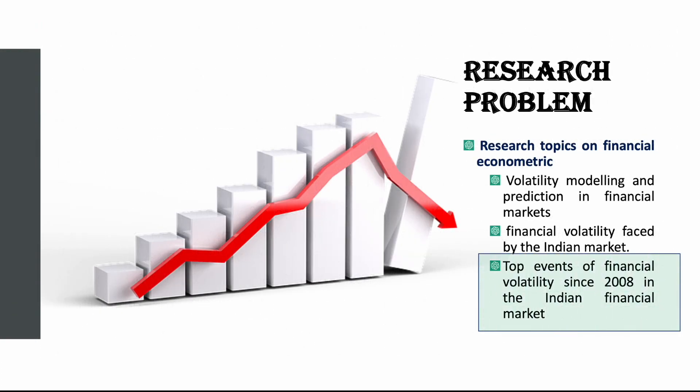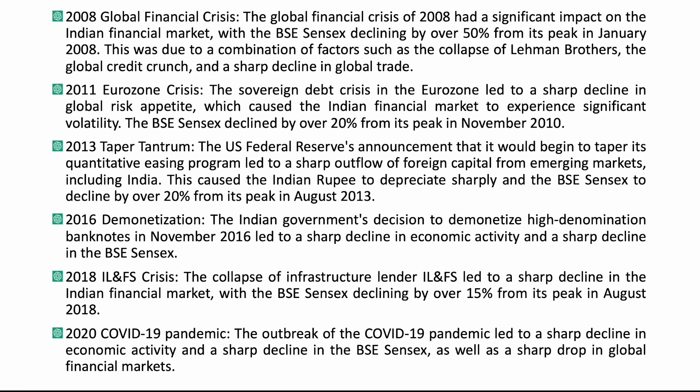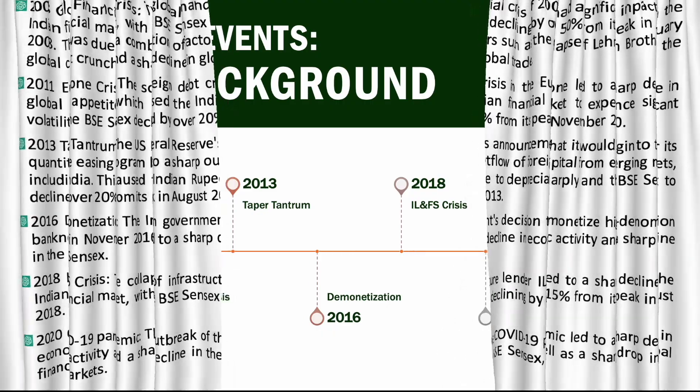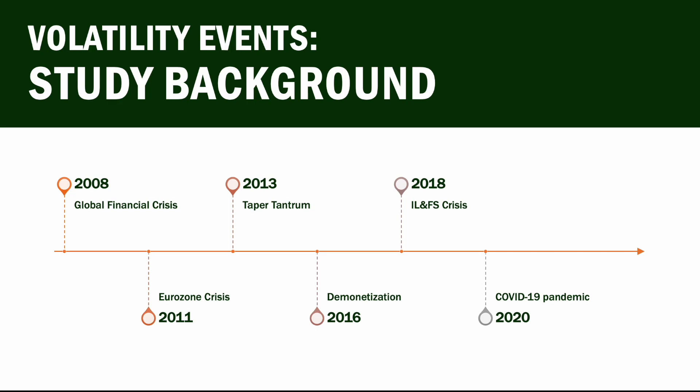Next, to build the background of our research problem, I asked ChatGPT: 'Top events of financial volatility since 2008 in the Indian financial market.' ChatGPT provided a long chronological list: the 2008 Global Financial Crisis, 2011 Eurozone Crisis, 2013 Taper Tantrum (quantitative easing by the US Federal Reserve), 2016 Demonetization of Indian currency, 2018 Infrastructure Lender Collapse, and the 2020 COVID-19 Pandemic. With this list of events, we can clearly prepare a study background and identify the key events that caused volatility in India.